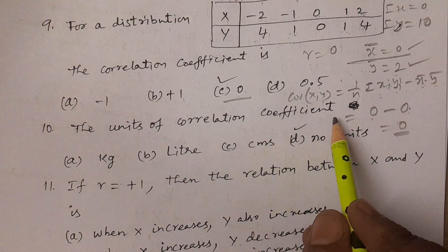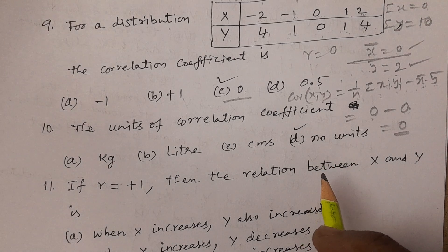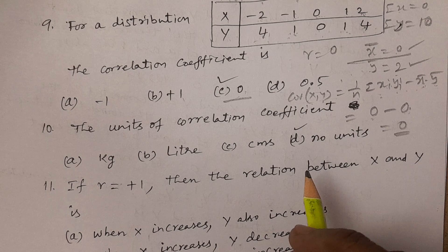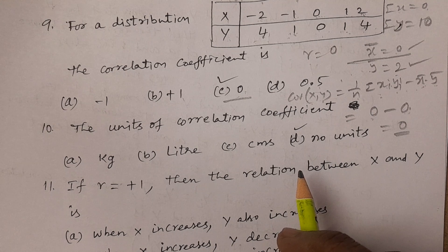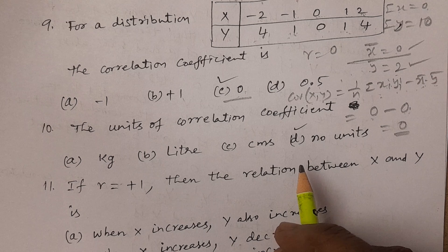Question number ten: what are the units of the correlation coefficient? There are no units for the correlation coefficient. It is a coefficient — it indicates how much relation, or what percentage of relation, exists between variables x and y, for example 0.8 means 80% relation.